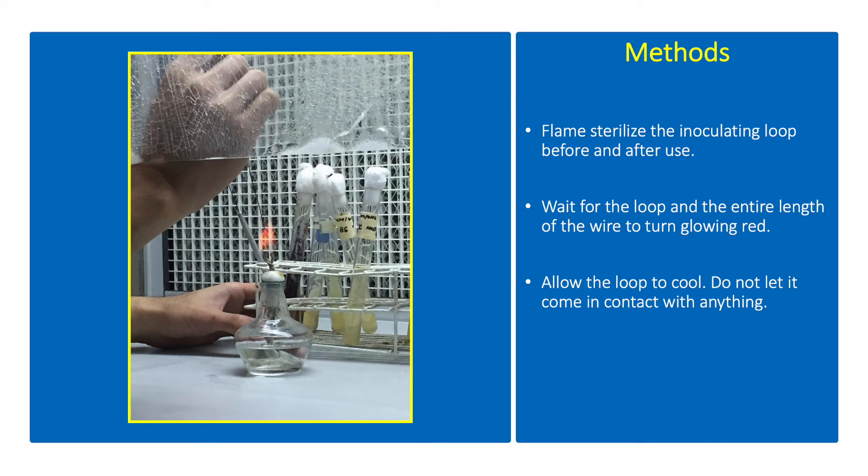Flame sterilize the inoculating loop over the flame of an alcohol lamp. Wait for the loop and the entire length of the wire to turn glowing red. This will incinerate all contaminants present on the wire before its use for the transfer of pure bacterial culture. Allow the loop to cool. Do not let it come in contact with anything.